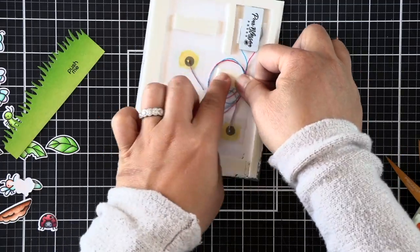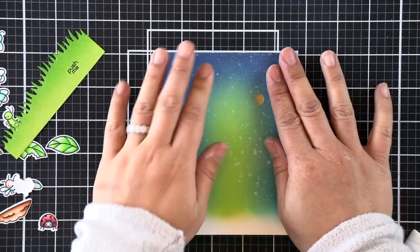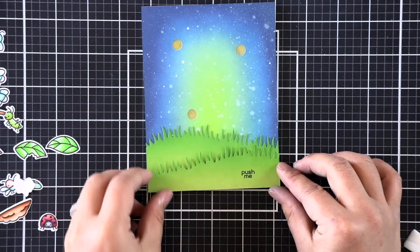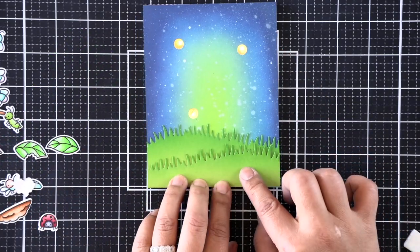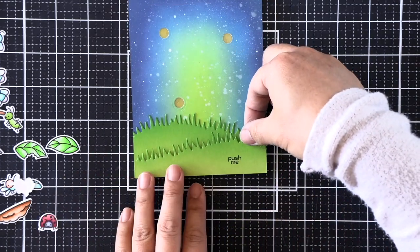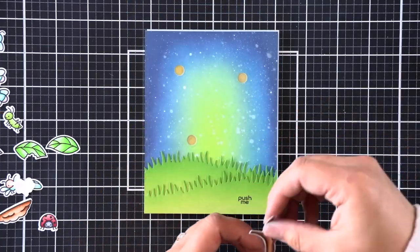On the backside of my card panel, I'm using a double layer of foam adhesive to match the height of our light up battery pack. And then we can go ahead and adhere that to a card base and then start creating our scene. I'm starting first with the grassy borders and making sure that that push me indicator is right where it needs to be to get our card to light up.